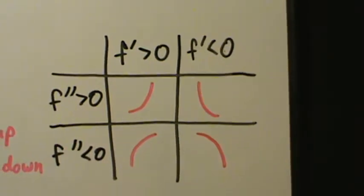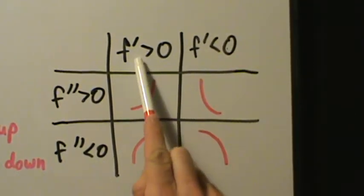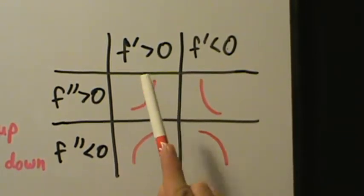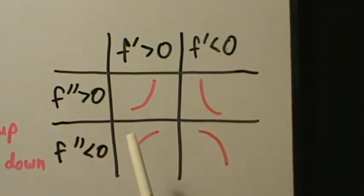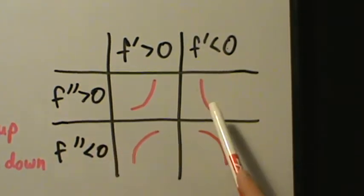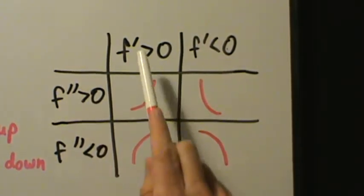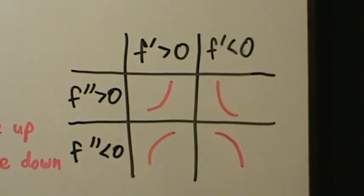We don't really want to memorize this chart, but it's helpful to understand what it's saying and know how to fill it in on your own. If f prime is positive, f is increasing. If f double prime is positive, f is concave up — so increasing and concave up looks like this. Decreasing and concave up looks like this. Increasing and concave down looks like this. And decreasing and concave down looks like this. In the next couple videos, we'll do examples using this concept.